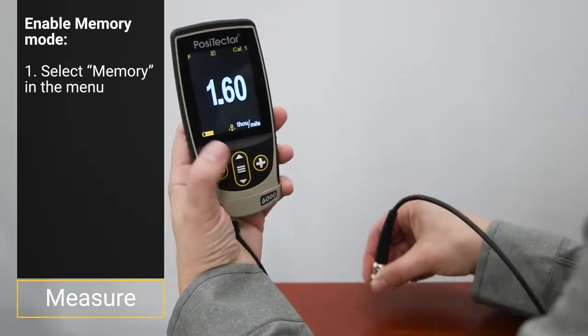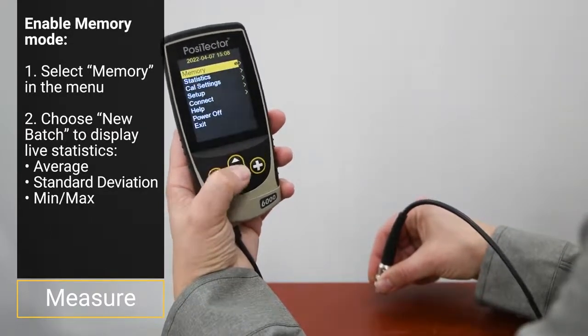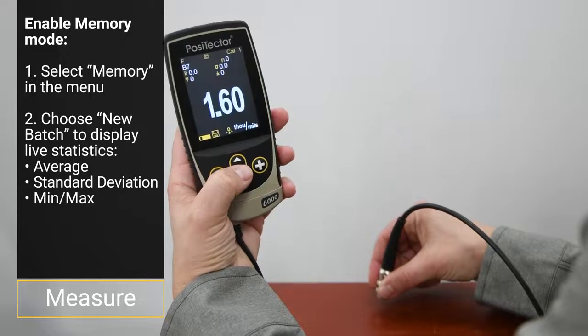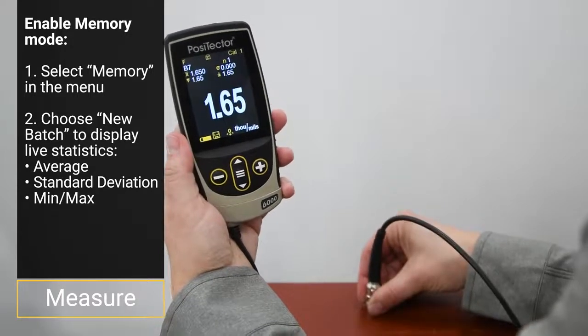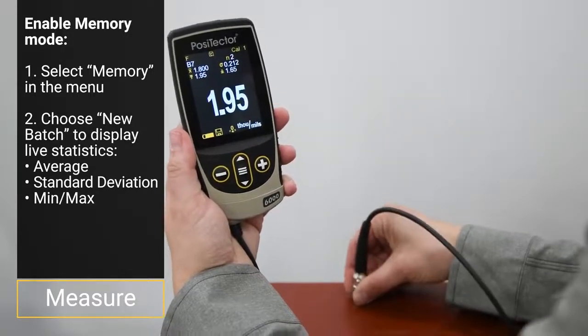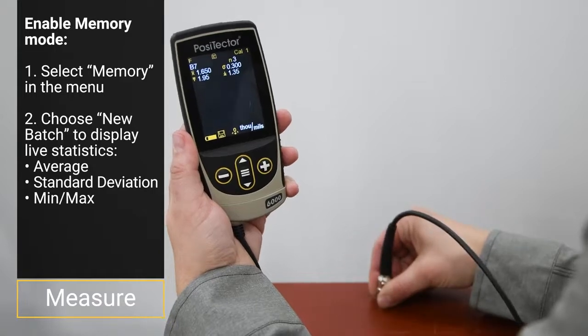When memory mode is enabled by selecting New Batch in the Memory menu, the PosiTector 6000 displays live statistics including average, standard deviation, and min-max while also storing readings for download.